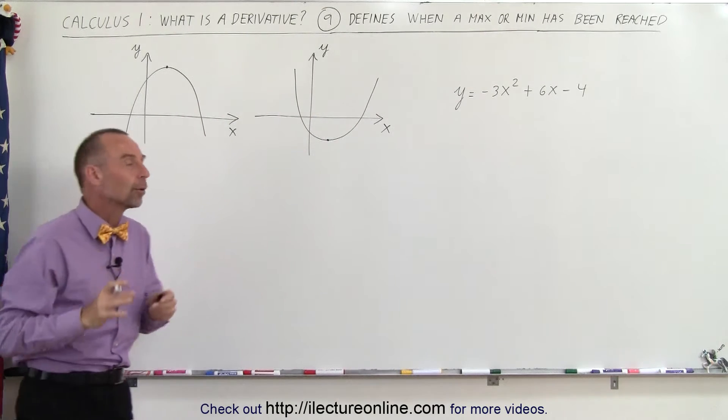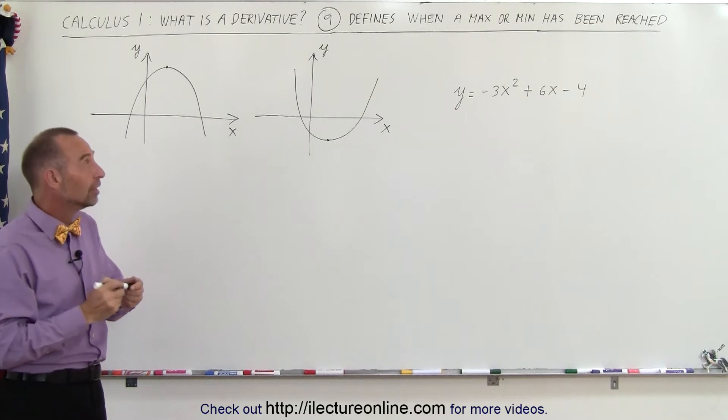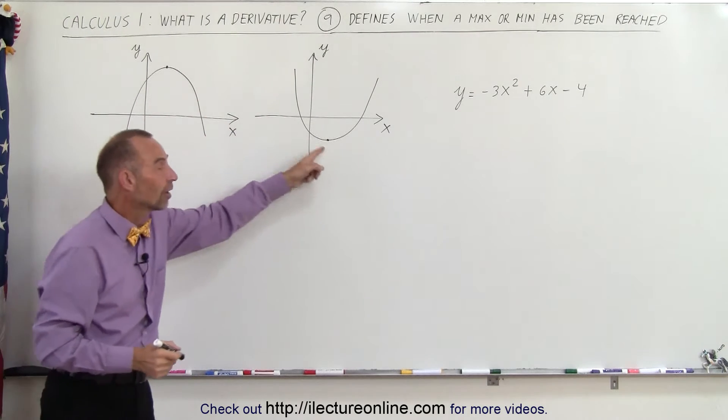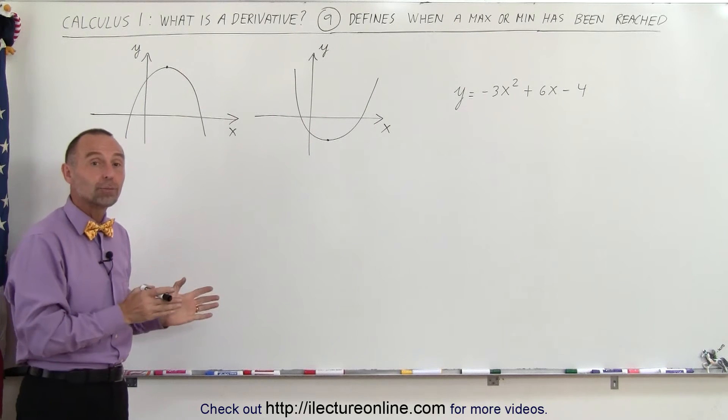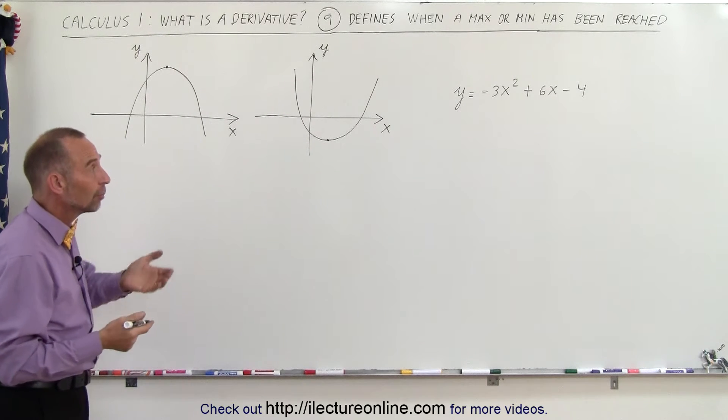There's no other point on the graph that gives you a lower value. These are of course the two vertices of the two parabolas. The derivative can help you find those points, and the way we can do that is with an example.